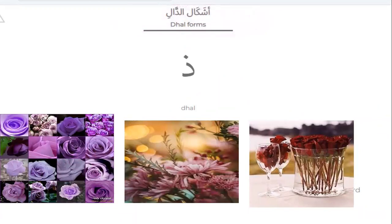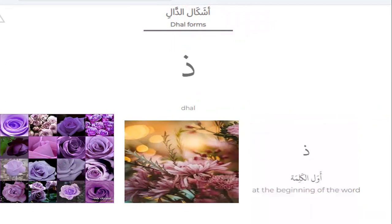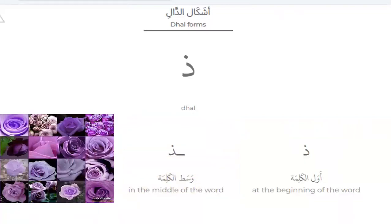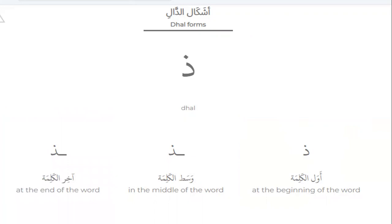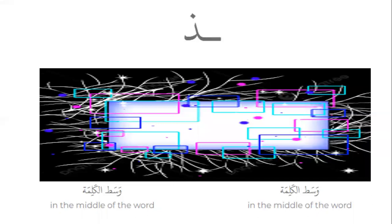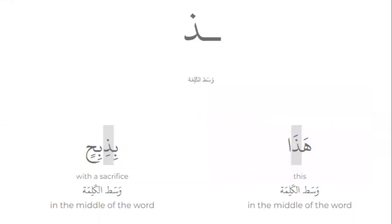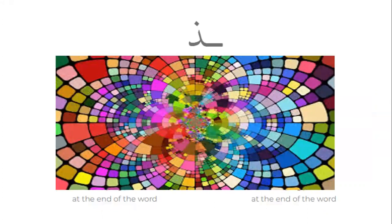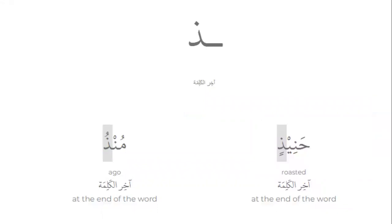Zal has three forms. Number one: at the beginning of the word — it looks like this. Number two: in the middle of the word — it looks like this. Number three: at the end of the word — it looks like this. Let's start with Zal at the beginning of the word. Please repeat after me — notice the shape of Zal. In the middle of the word, it looks like this — please repeat and notice.